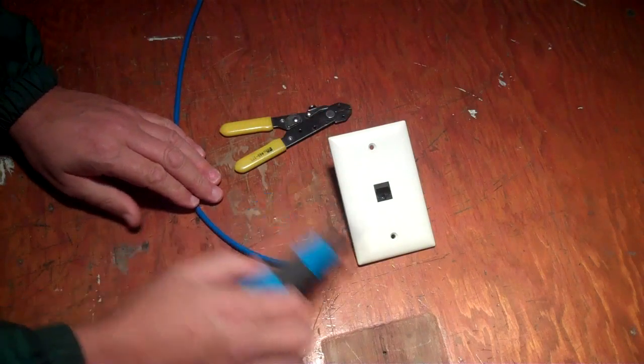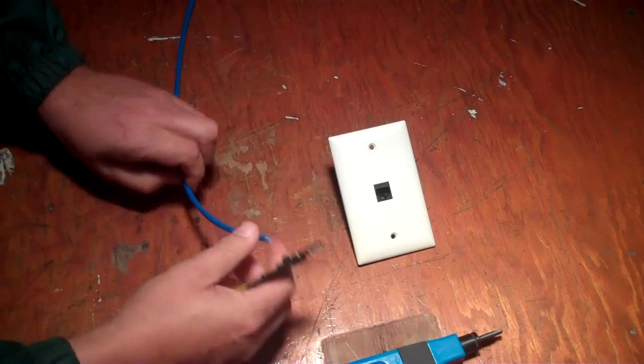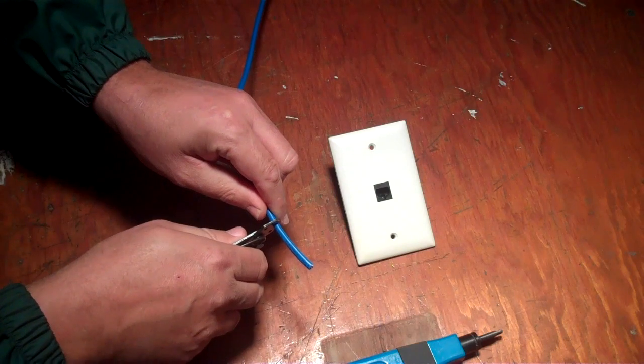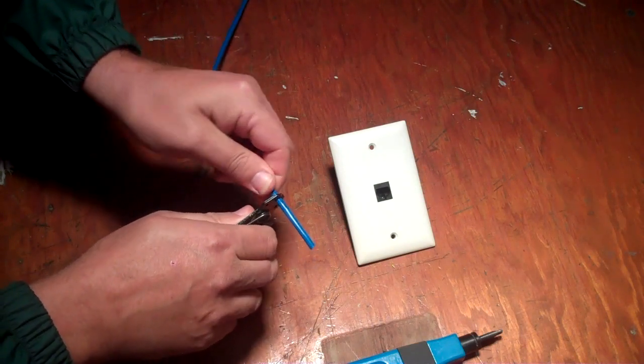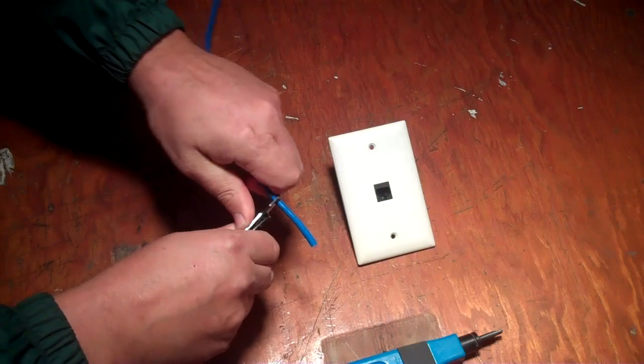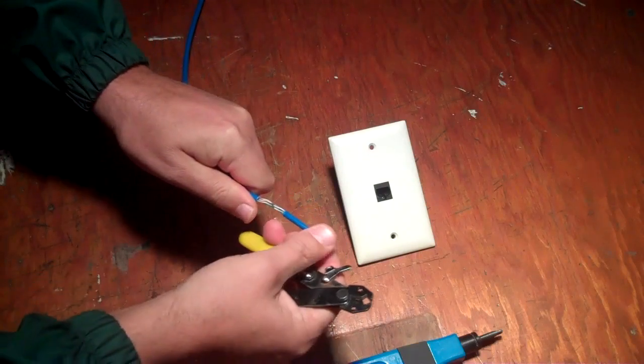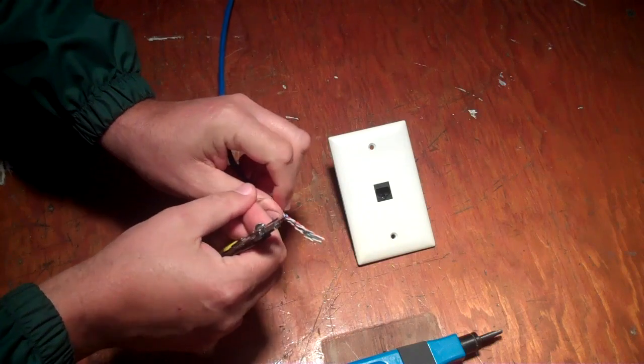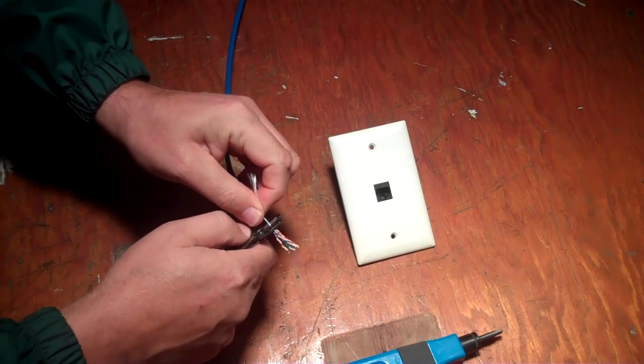So let's begin. First thing I want to do is carefully remove the outer blue jacket of the Cat5 wire. Now this string, I like to cut it off because I'm not going to use it.